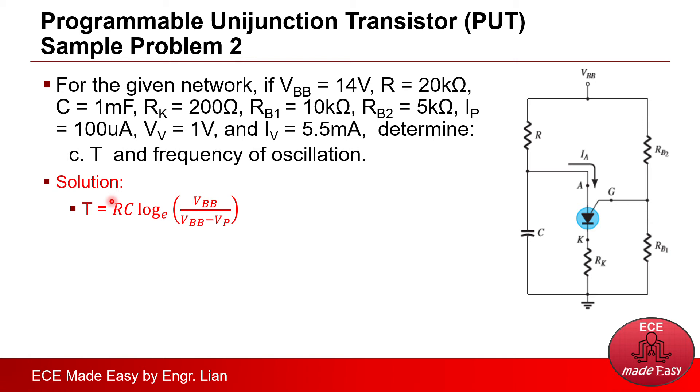So the period equals RC times logarithmic to the base e of VBB all over VBB minus VP. And since all the values are given, we will just need to substitute them all and solve, and we will be able to get 25.221 seconds.